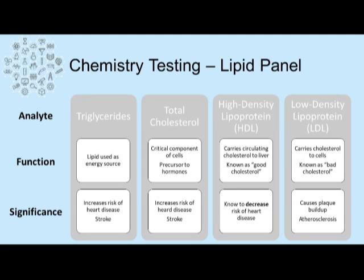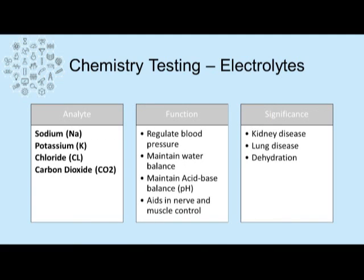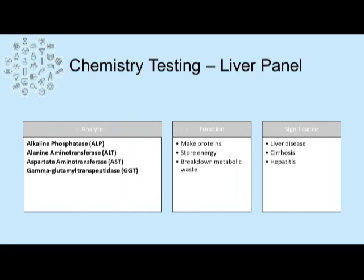Other panels include lipid panels, which include triglycerides, total cholesterol, high-density lipoprotein, and low-density lipoproteins. There are electrolytes tested as part of most panels, including sodium, potassium, chloride, and carbon dioxide. Liver panel tests include alanine phosphatase, alanine aminotransferase, aspartate aminotransferase, and gamma-glutamine transpeptidase; each of them end in '-ase' because they are all enzymes.